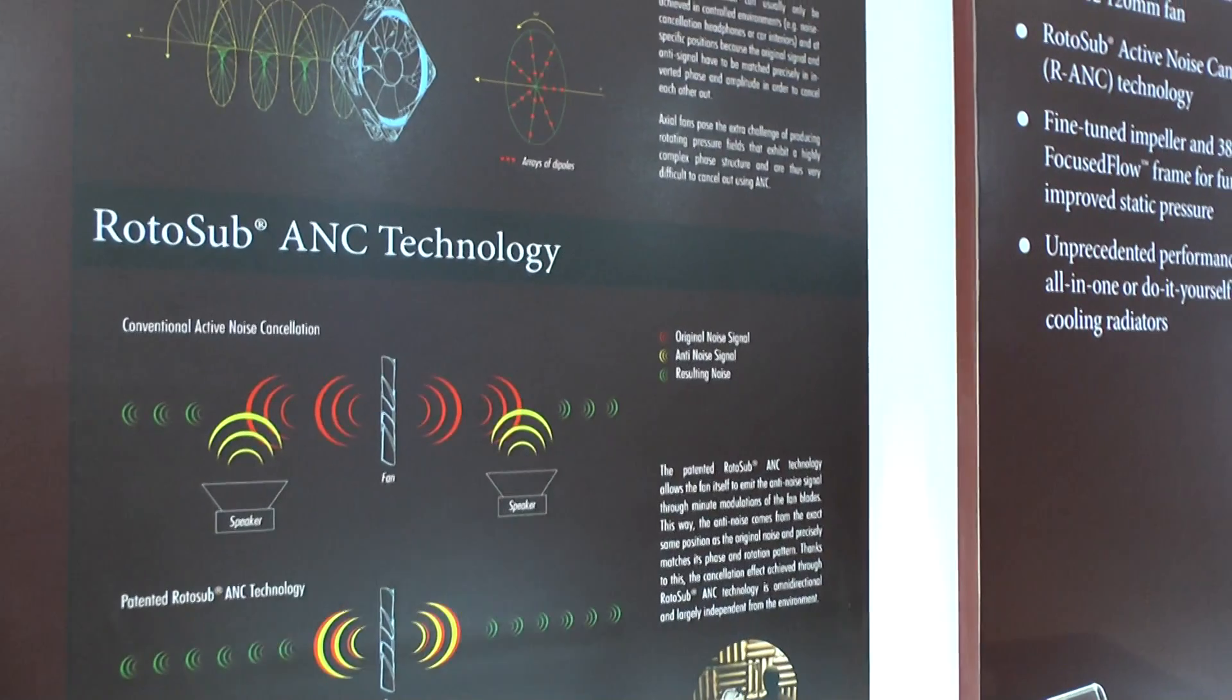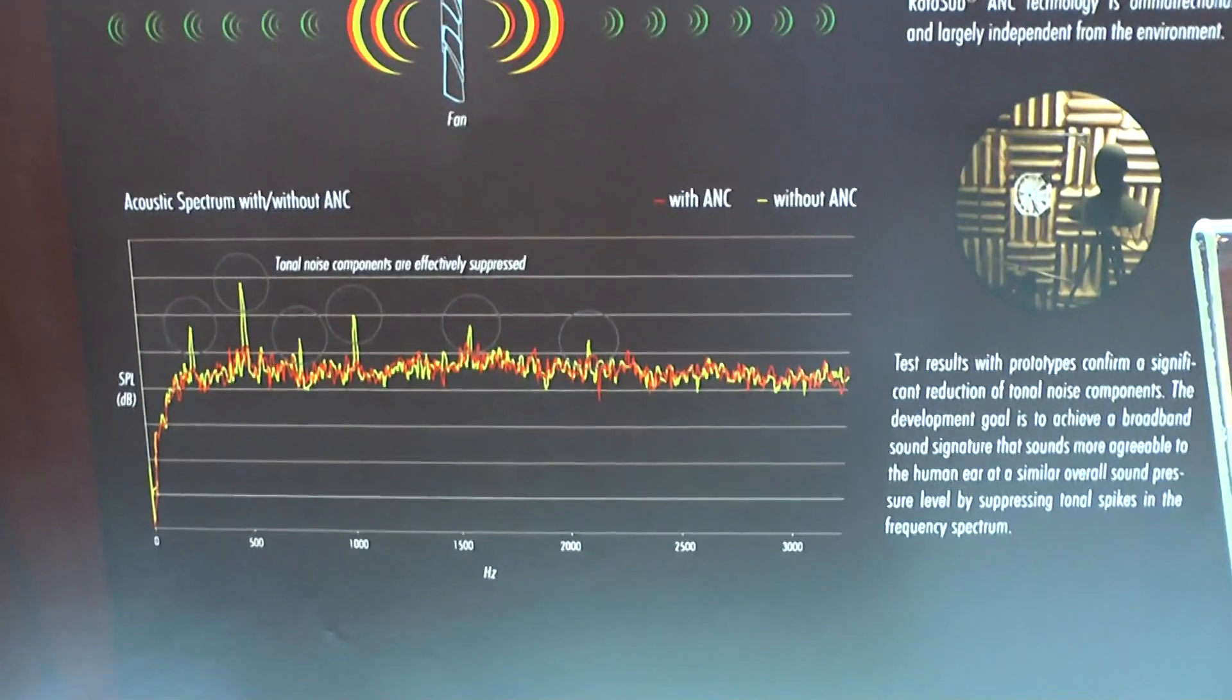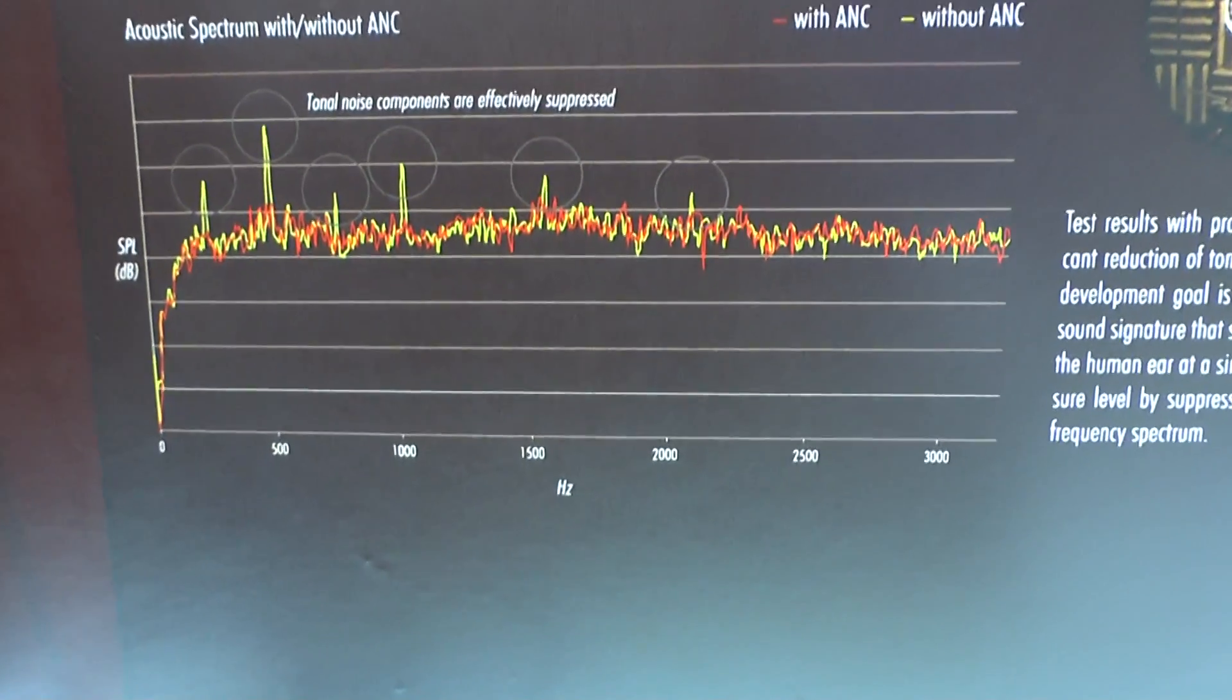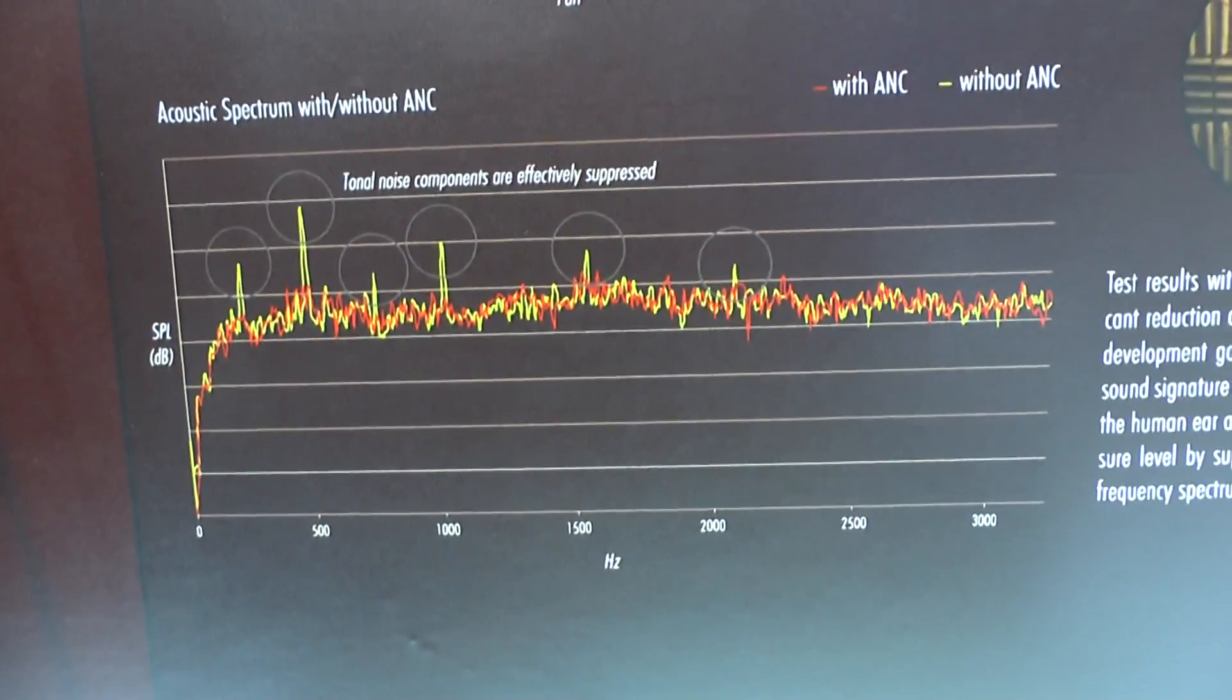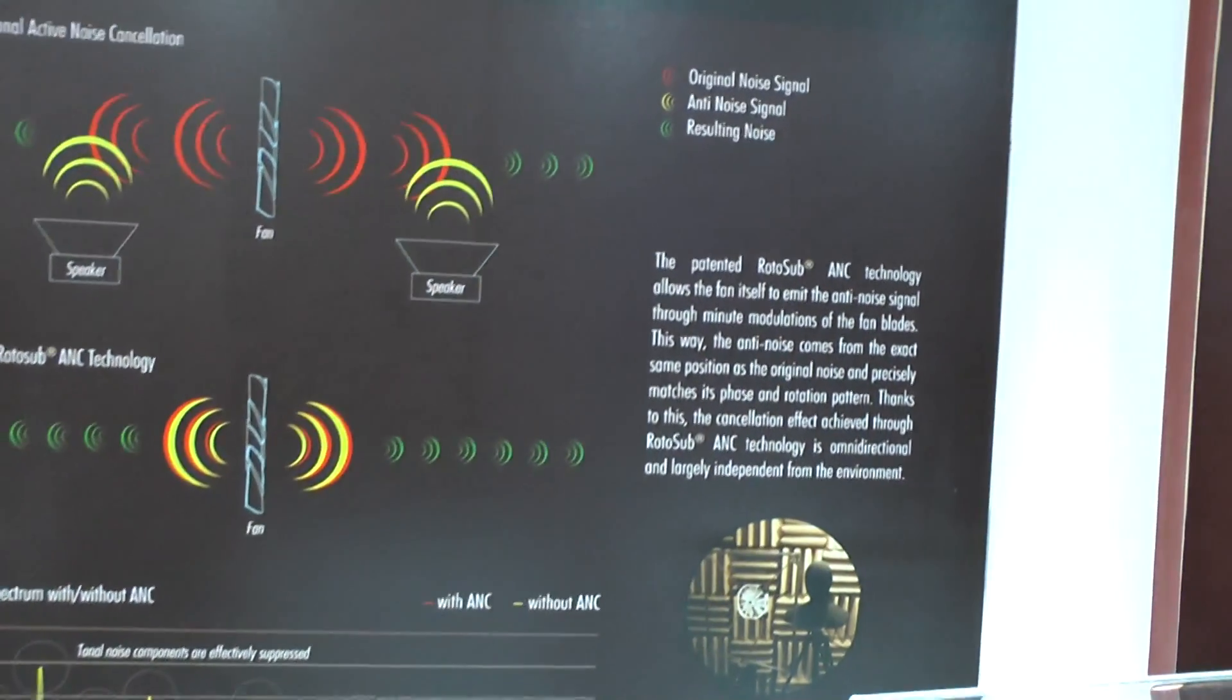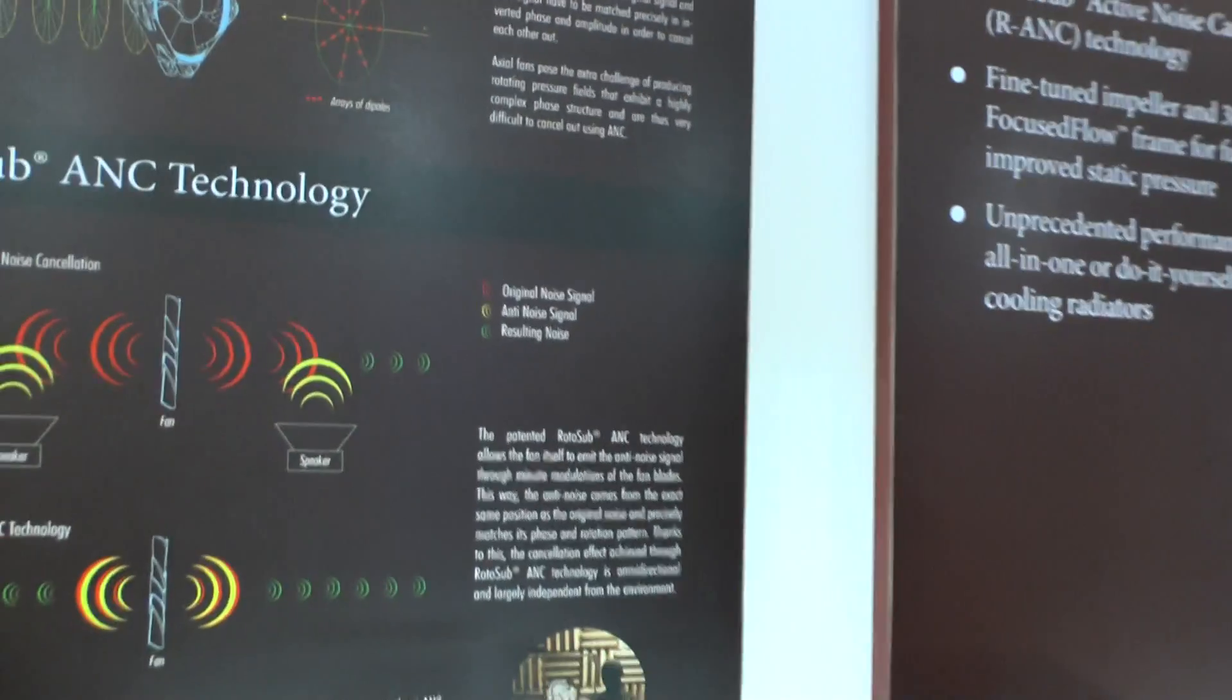Now the advantage of this technology is that this anti-noise signal will have the same rotational pattern as the original noise signal of the fan, and it will come from the same source. So it will behave very similar when it hits, for example, a heat sink or a radiator or a fan grill.